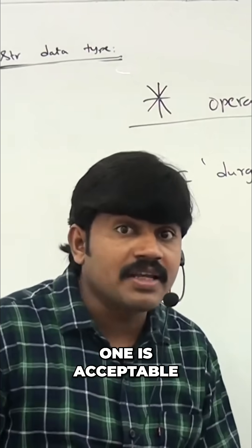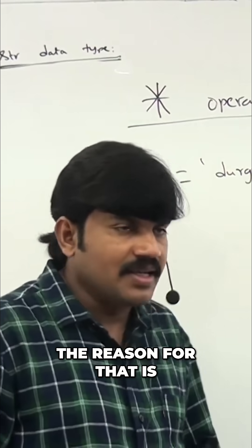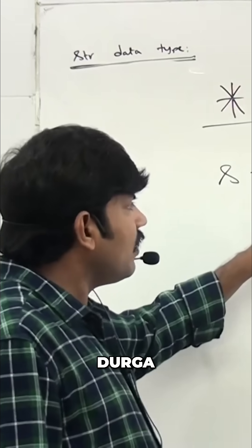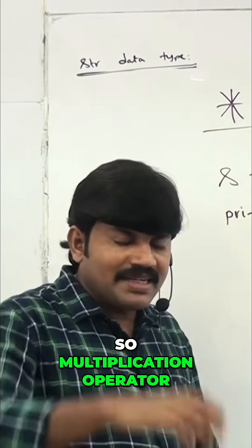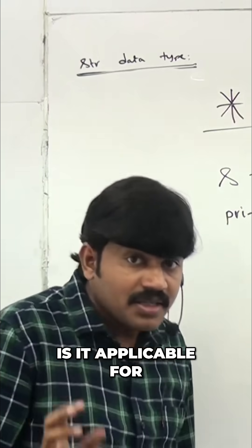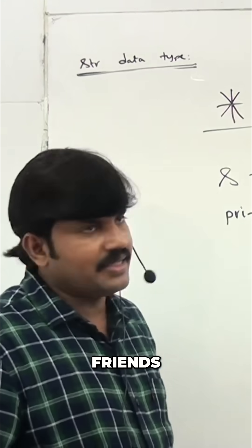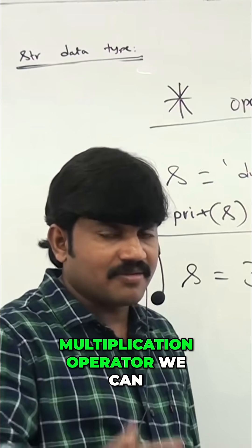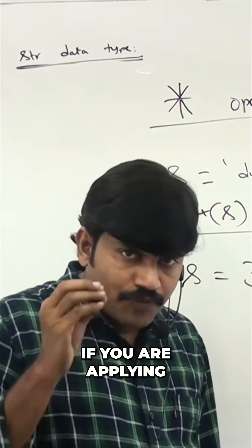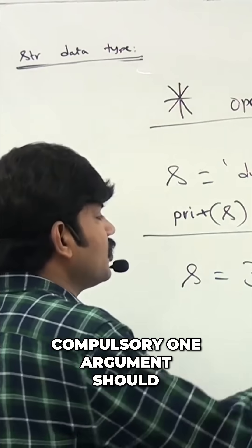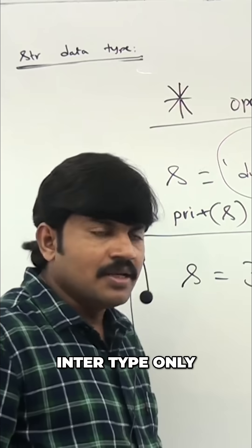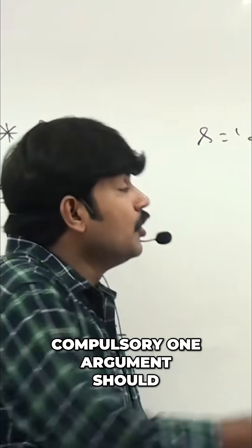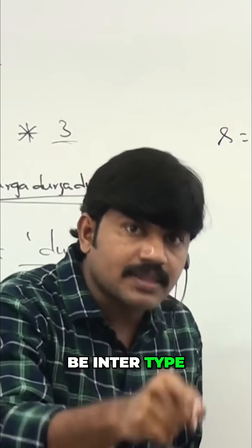This is called the string repetition operator. The multiplication operator — the star operator — is also applicable for strings. For example, 'durga' three times. When applying the star operator to a string, compulsory one argument should be string type and the other should be int type only.